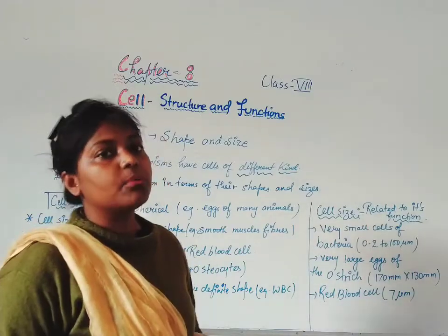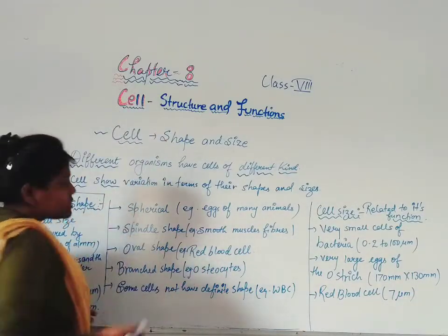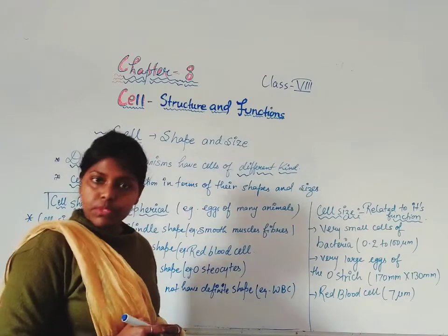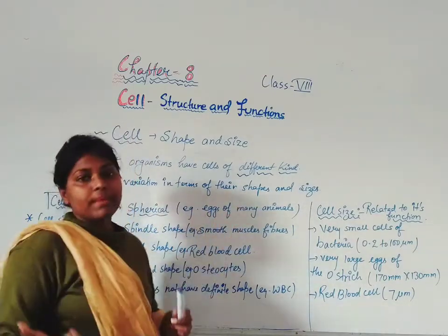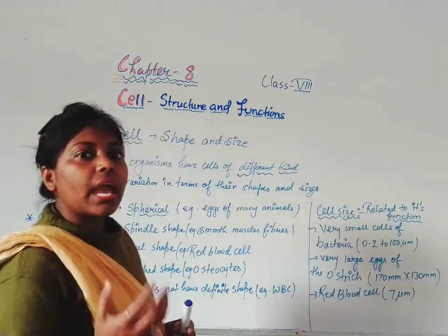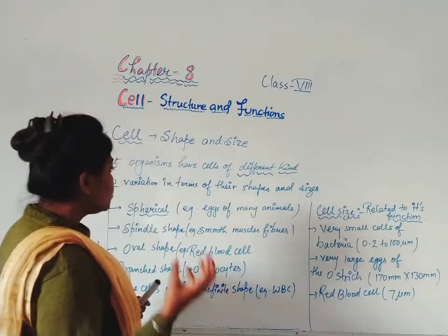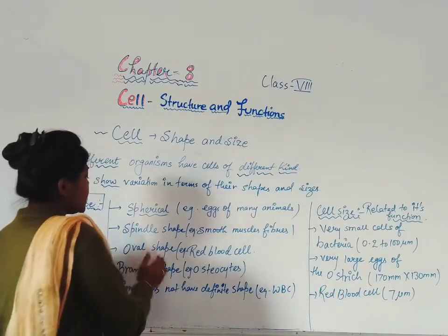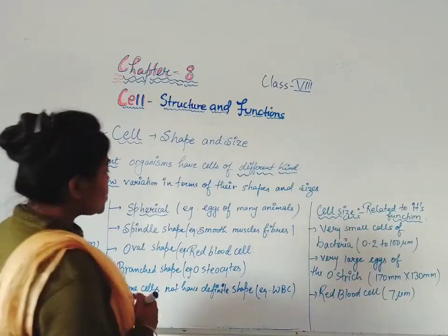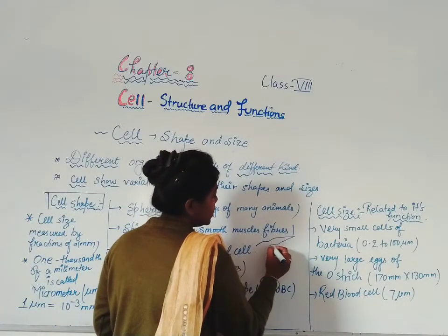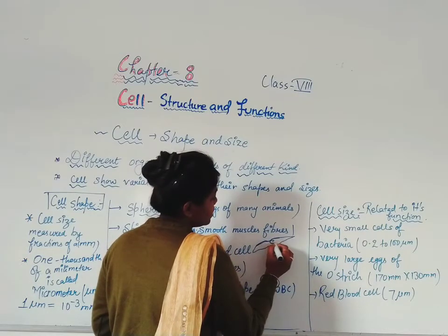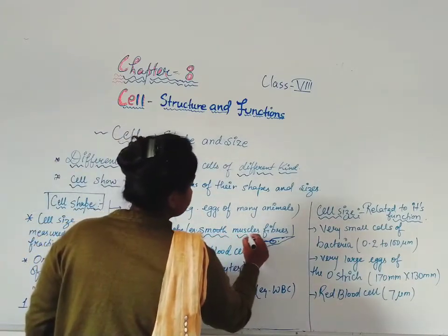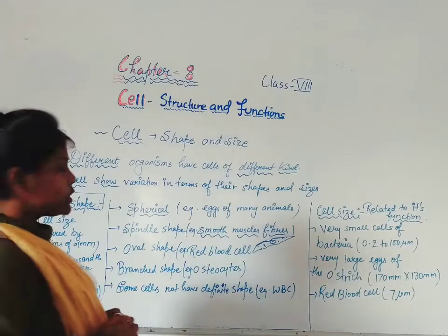Different types of shapes are seen in cells. The first shape is spherical shape. Some cells in the body are spherical in shape. For example, eggs of many animals are spherical in shape. So those eggs are single cells. Cells can also be spindle-shaped. Spindle shape looks like a spindle. An example of spindle-shaped cells is smooth muscle fibers.